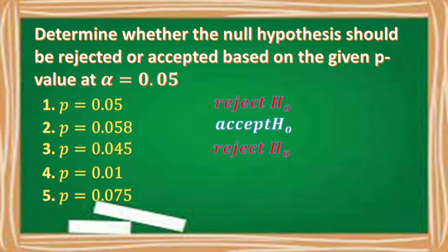Number four: our p-value is equal to 0.01. The decision is to reject the null hypothesis because our p-value is less than the alpha level. Number five: the p-value is equal to 0.075. The decision is to accept the null hypothesis because our p-value is greater than the alpha level.